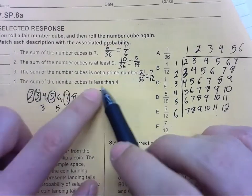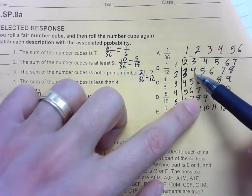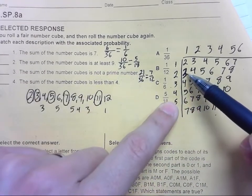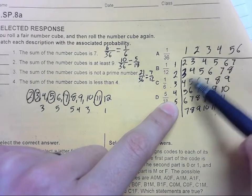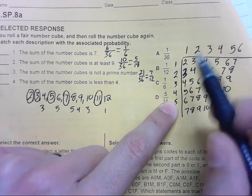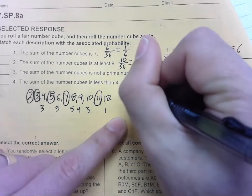Problem 4: The sum of the number cubes is less than 4. So how many of these sums is less than 4? We don't want 4, we want less. So there's 3 and 2. That's 1, 2, 3. 3 out of 36.